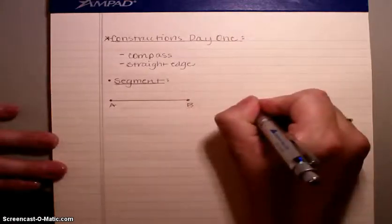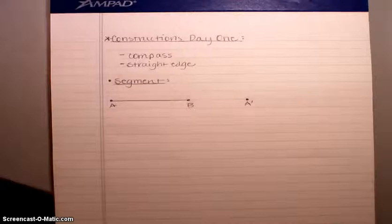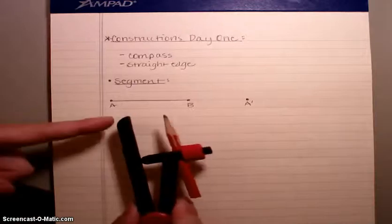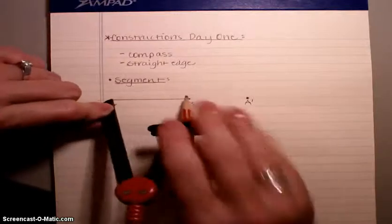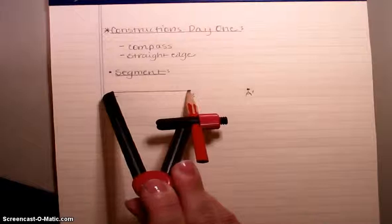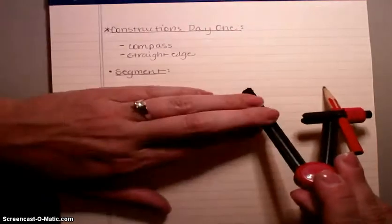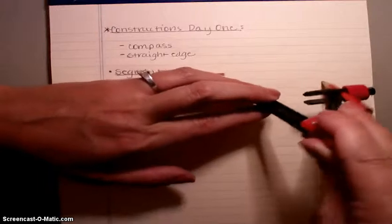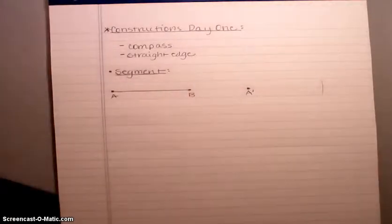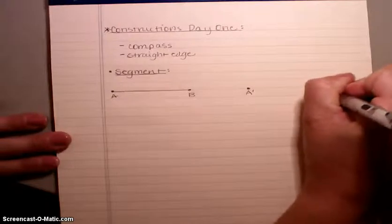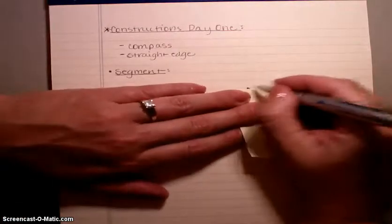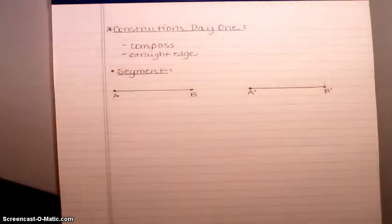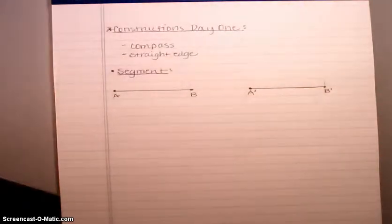Here's what we're going to do. We're going to start with an endpoint and I'll call this A prime — it's A with a little dash, meaning it's the copy of A. Now on your compass, you'll notice there's an end with a pin and an end with a pencil. Put your pin on A and your pencil on B so you've opened it up that wide. Keep it open and come over to A prime. Put your pin on A prime and carefully, very lightly, make a little mark — that's where B prime needs to be. Then use your straight edge, and you've just replicated that exact segment.